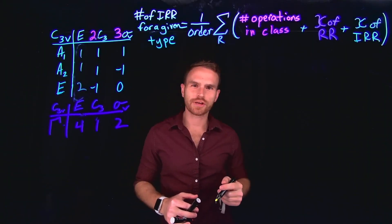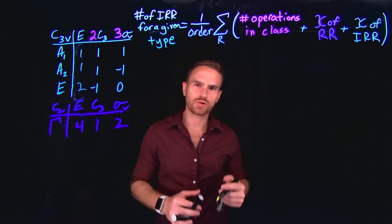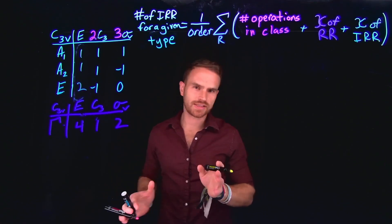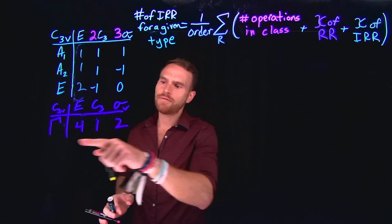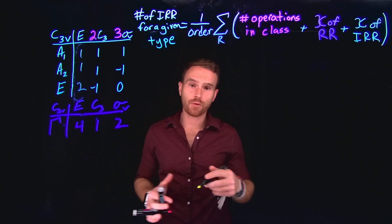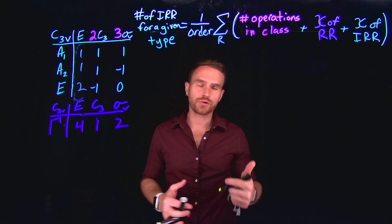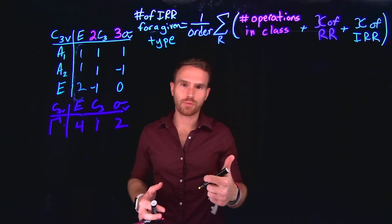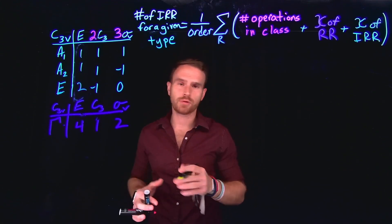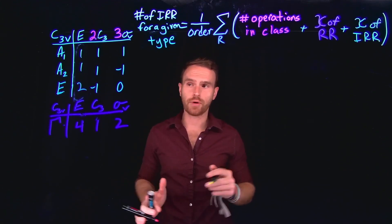In this video, we're going to be looking at how to reduce reducible representations. On the screen, I've provided an example of a reducible representation for the C3V point group. For your own molecules, you first need to assign point groups and then find the correct character table, but for this example, let's assume that we're in the C3V point group.